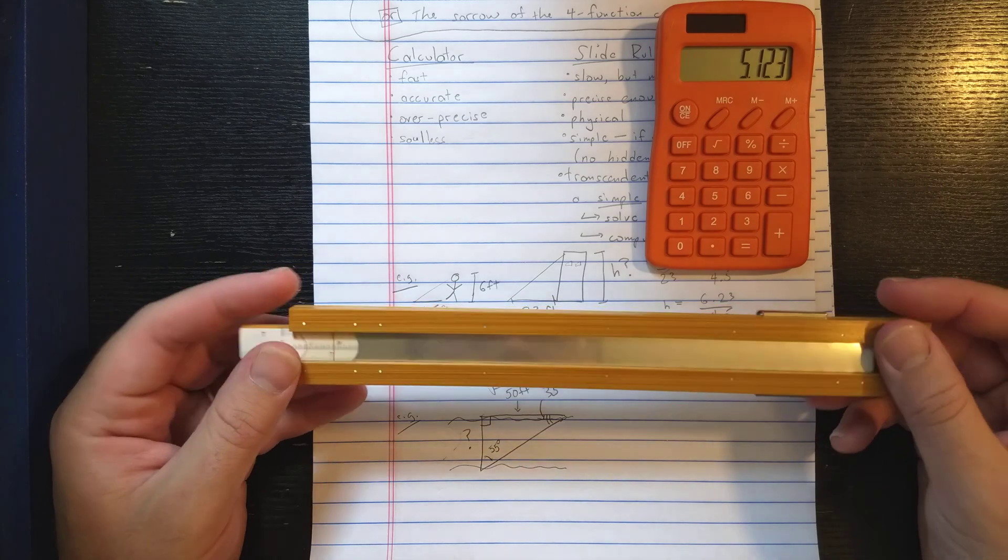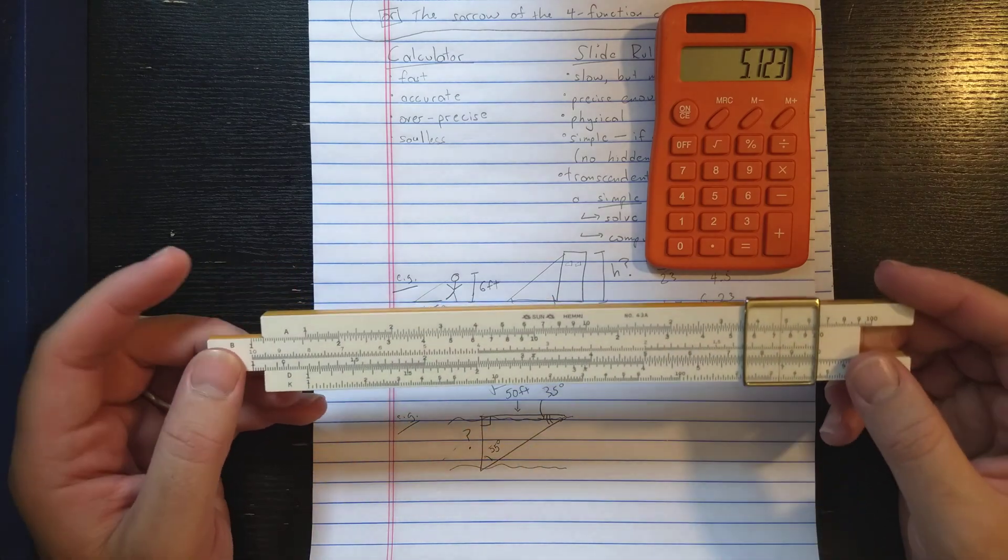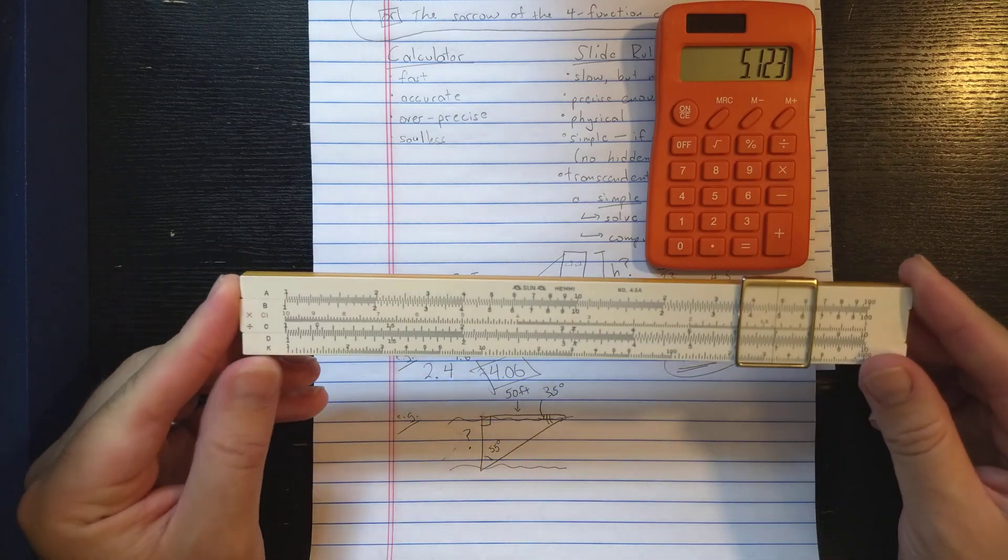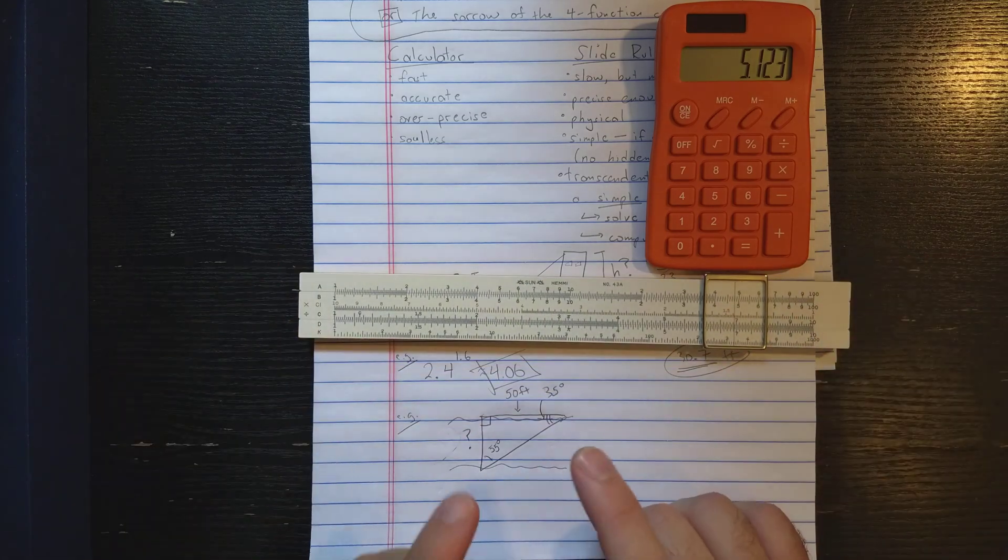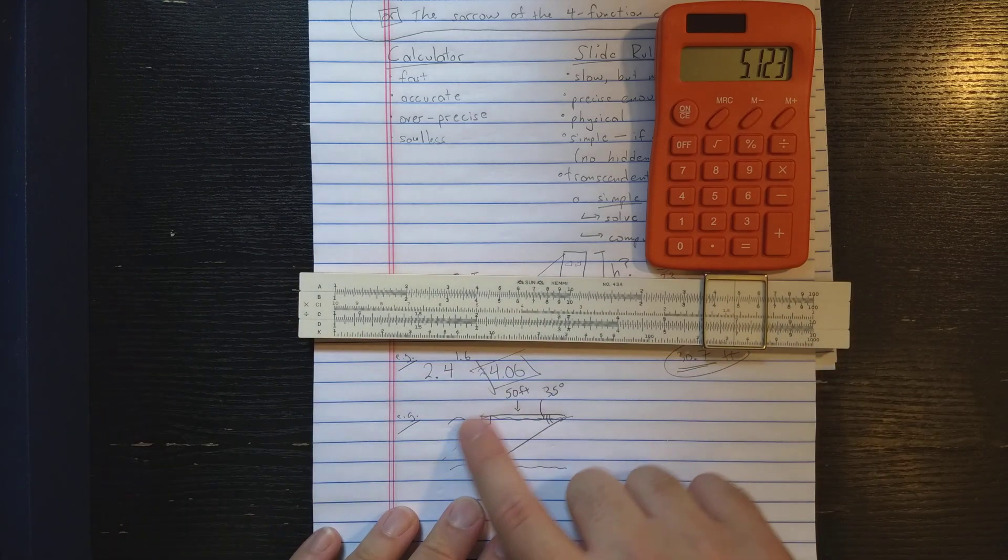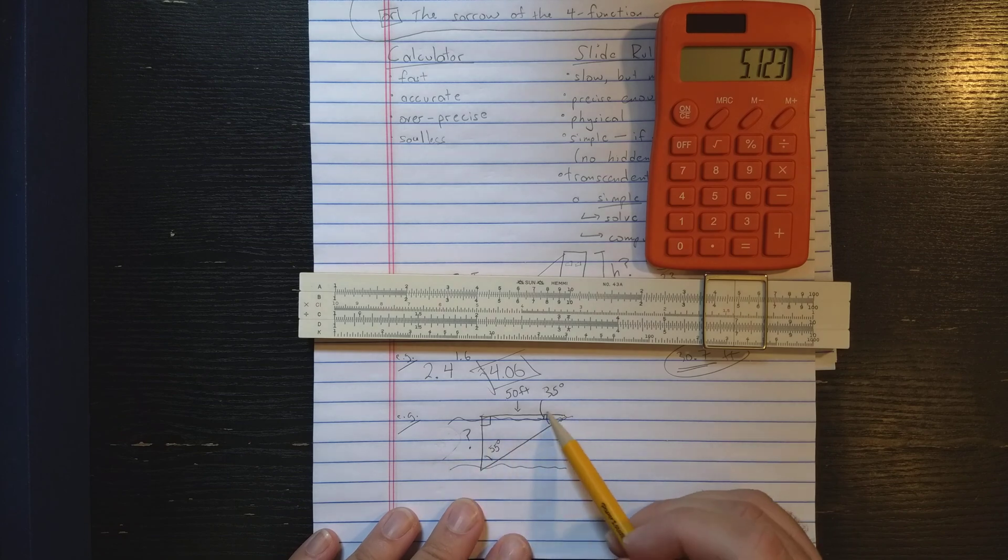So even the most basic slide rule is capable of computing transcendental functions. Let's do this calculation. Say I want to solve this triangle. Maybe I'm trying to measure across a river here. So I've measured maybe this angle and I've calculated this angle.